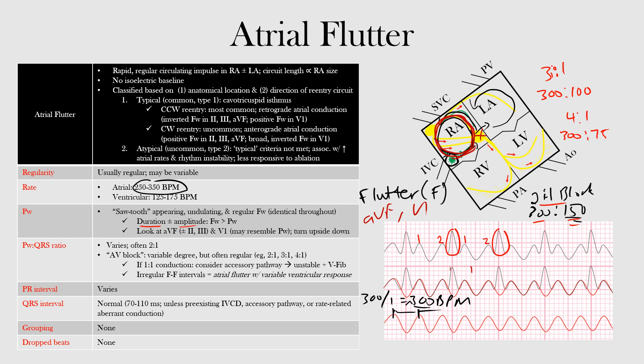Once in a while you can see atrial flutter with 1:1 AV conduction, meaning one flutter wave for every one QRS complex. This is often due to sympathetic stimulation or the presence of an accessory pathway, especially if AV nodal blocking agents are given to a patient with WPW syndrome. This 1:1 form is commonly associated with severe hemodynamic instability and progression to ventricular fibrillation.